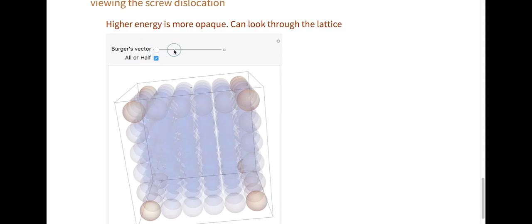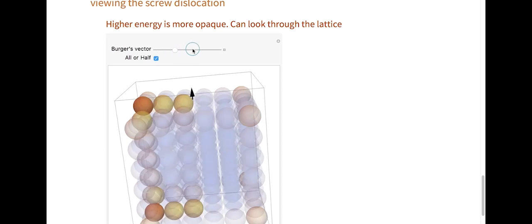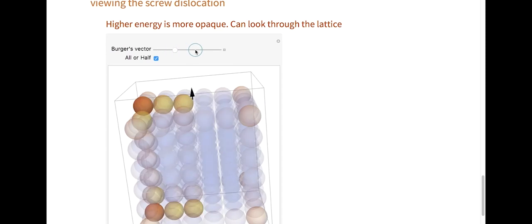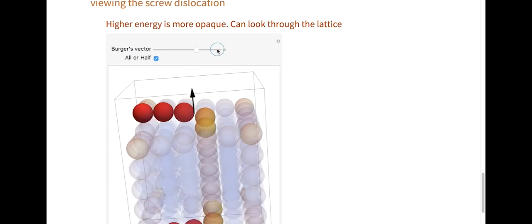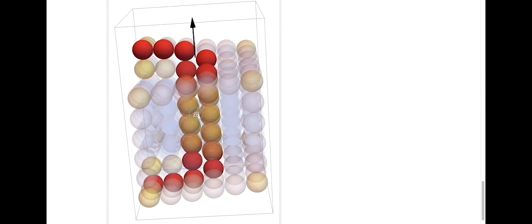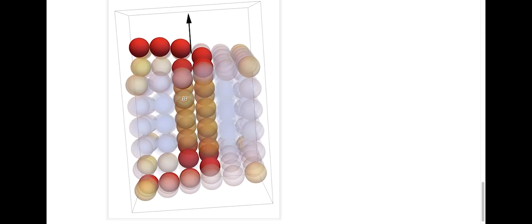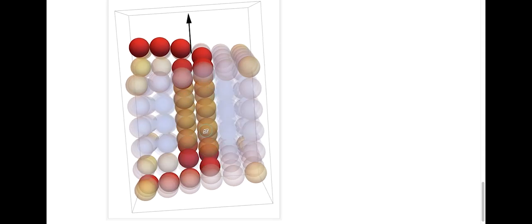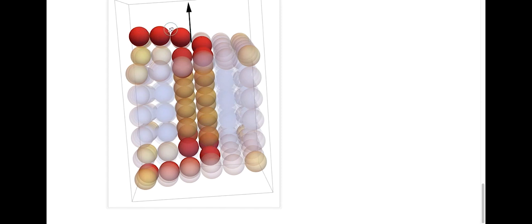So as I increase the magnitude of the Burgers vector here, you start to see that atoms around the center become more opaque. And you can really see where the locations of high energy are. Here is kind of this column of high energy right in the center. These parts have higher energy as well because they are more exposed, they have fewer neighbors.